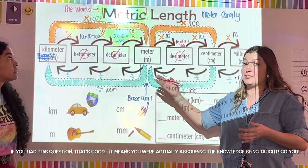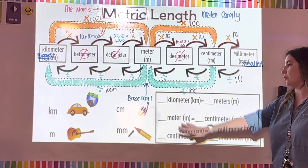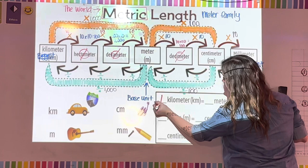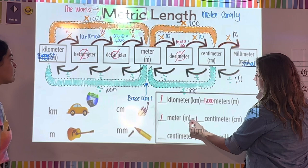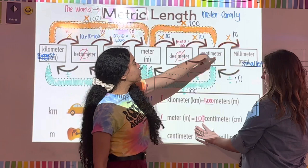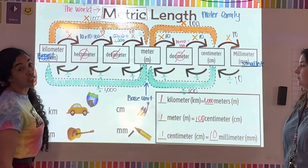Metric is much easier because it's all powers of 10 — you just move the decimal. On your star chart: one kilometer equals 1,000 meters; one meter equals 100 centimeters; one centimeter equals 10 millimeters. Make sure you have everything filled in on your notes.